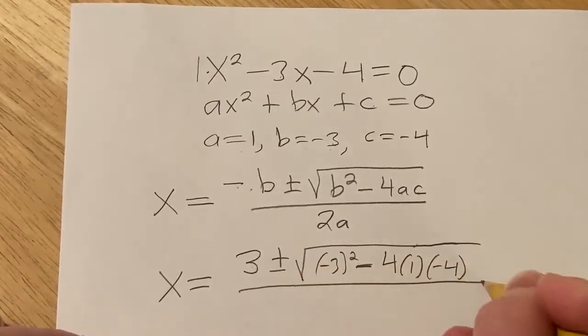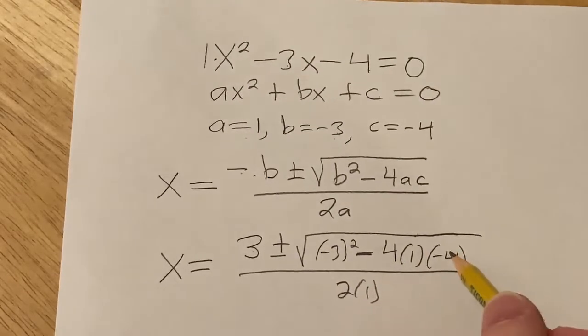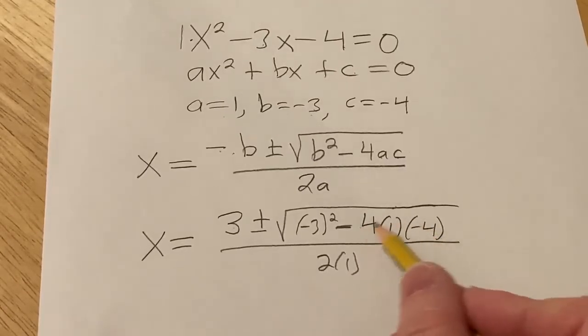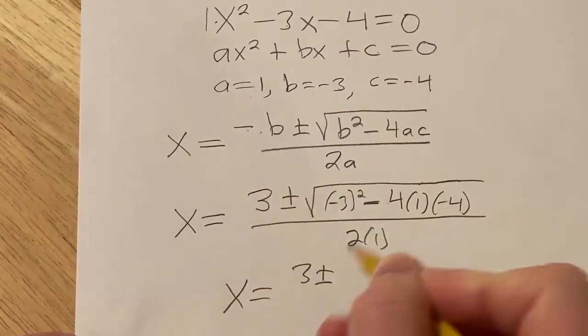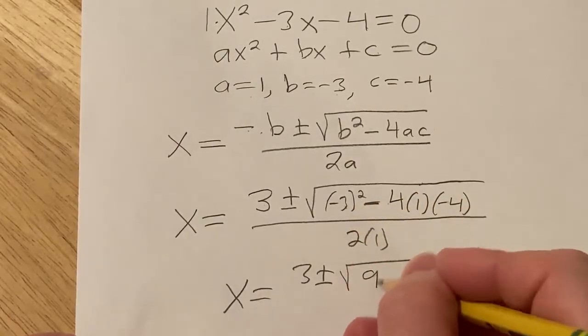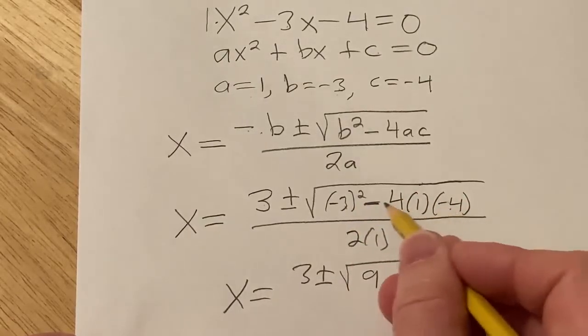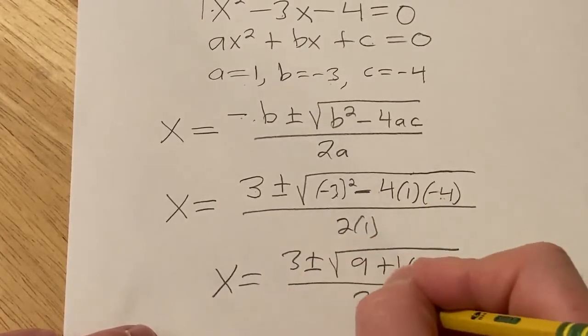All over 2a, so 2 times 1. And the reason I didn't want to skip this one is because look what happens here. There's two negatives, so it's going to become a positive. So we have x equals 3 plus or minus the square root of negative 3 squared is 9, and this is 4 times 4, which is 16, and it's positive because there's two negatives all over 2.